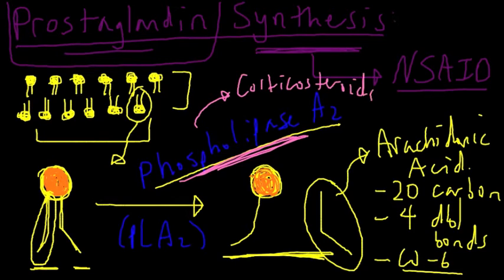So corticosteroids, remember, are steroidal anti-inflammatory drugs as opposed to non-steroidal. And so phospholipase A2 is inhibited, and as a result, prostaglandin synthesis is reduced through that mechanism.